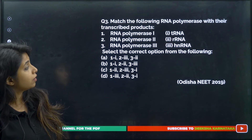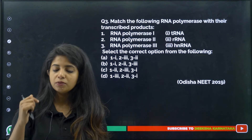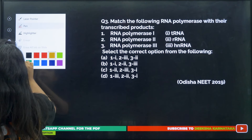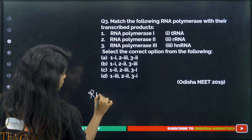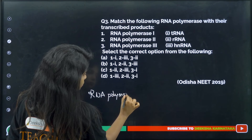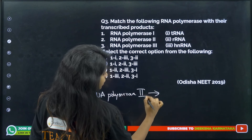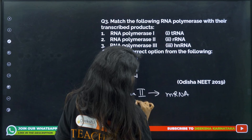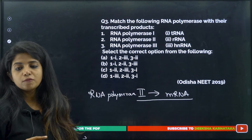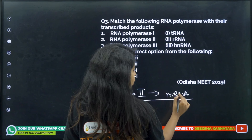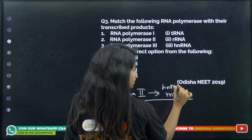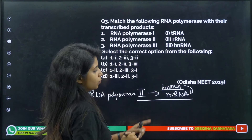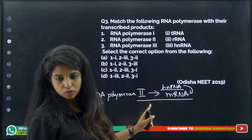Match the RNA polymerases with their transcribed products. Always remember: RNA polymerase 2 is the main one responsible for transcription of DNA into mRNA — or more precisely, HnRNA, which matures into mRNA. HnRNA has exons (regions coding for genes) and introns (regions not coding for anything). When introns are removed and only exons remain, you get the mature mRNA.